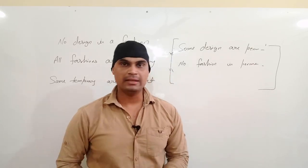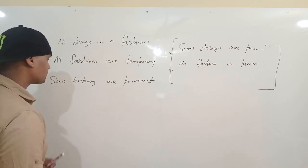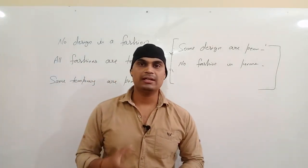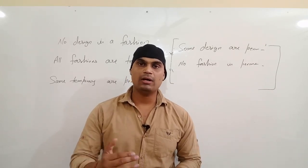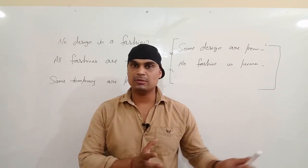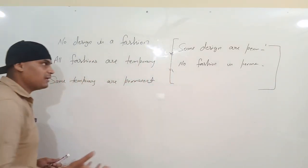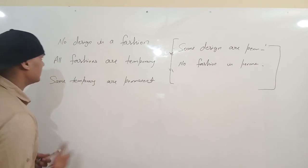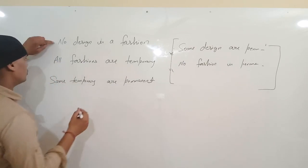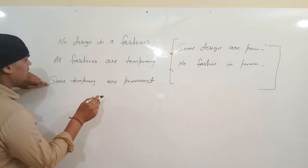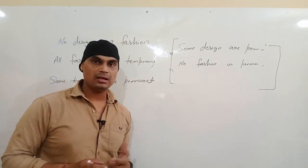Ab hum Level 2 ki taraf chalte hain. Yahan questions thode aur mushkil hain — hum normal practice kar chuke hain, ab upar level dekhte hain. Is question mein sabhi tarah ke cases aa gaye hain: 'no', 'all', 'some', connections hain aur koi connection nahi hona — sab kuch is question ke andar aa gaya hai.